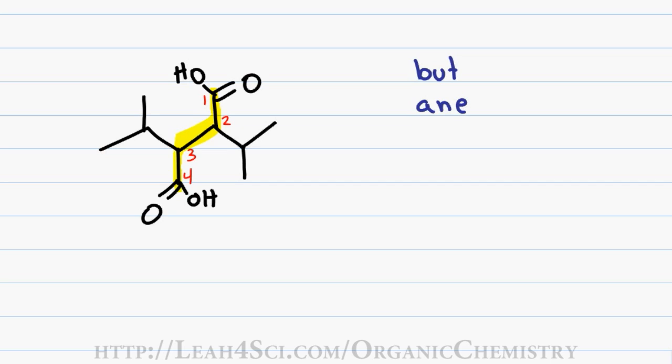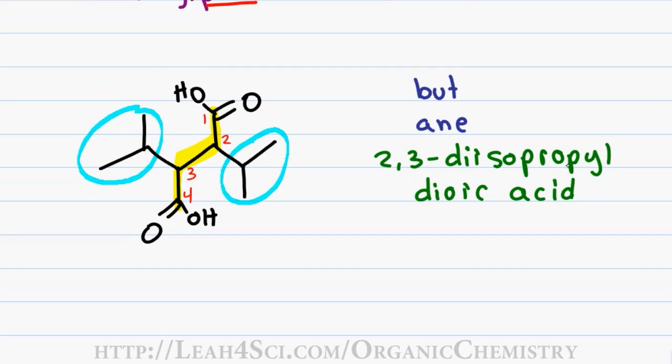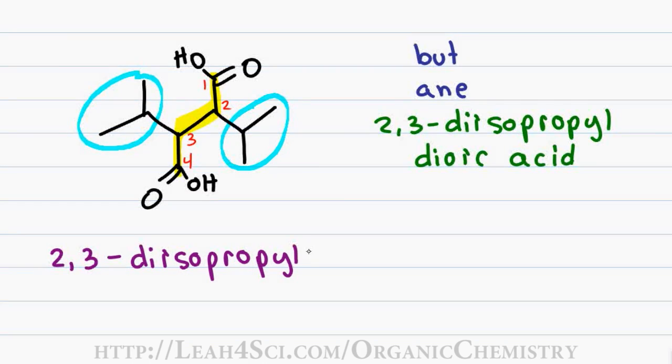Since this is a symmetrical molecule, it didn't matter if I started numbering from the top or the bottom. I have two isopropyl substituents coming off of both carbon 2 and carbon 3. If you're not comfortable identifying the isopropyl group, go back to my video on naming branch substituents, giving me the prefix 2,3-diisopropyl. And my two carboxyl groups give me the ending of dioic acid. Putting this name together, I get 2,3-diisopropylbutanedioic acid.